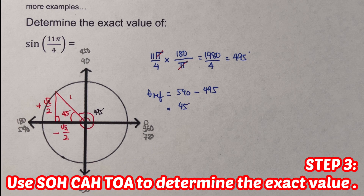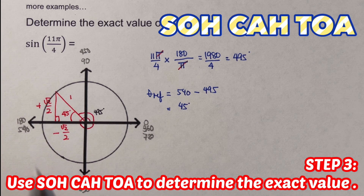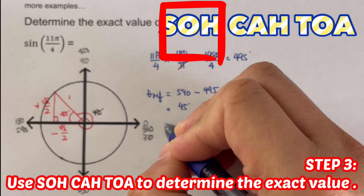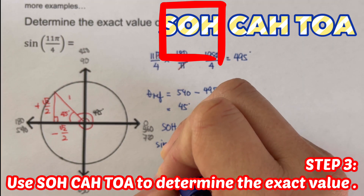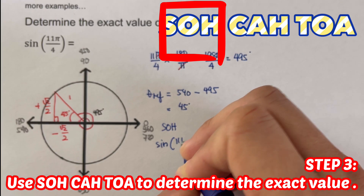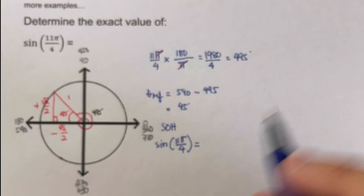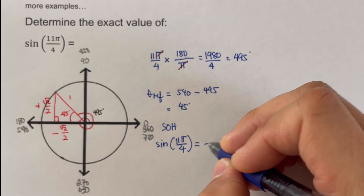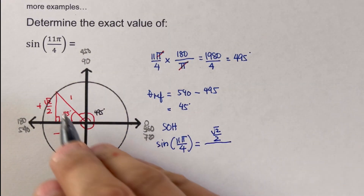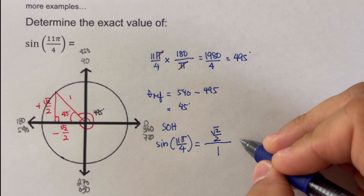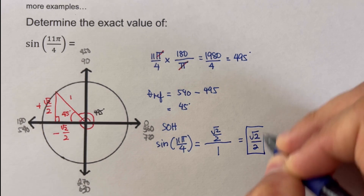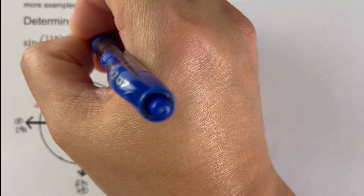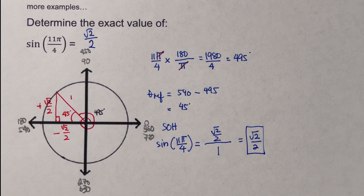The third step is to use SOH-CAH-TOA. Since this is sine, we use SOH: opposite over hypotenuse. Sine of 11π/4 equals √2/2 divided by 1. So the exact value is √2/2.